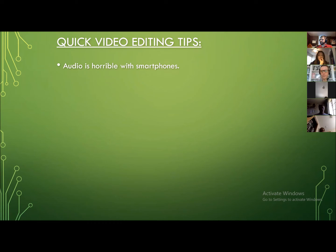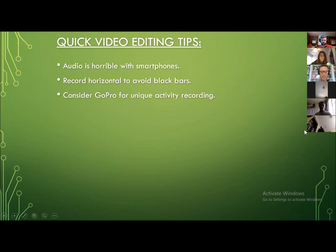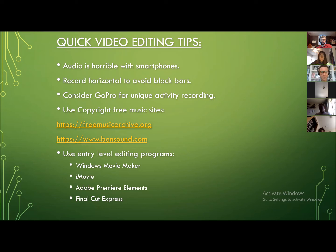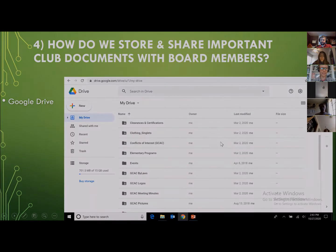Some editing tips: do not count on smartphones for capturing audio — use wireless microphones if you can. Record horizontally, particularly with iPads and smartphones, meaning hold it long ways rather than vertically, to avoid black bars when you post those videos later. For physical activity settings, consider using a GoPro. For things like edTPA, you don't need advanced software like Final Cut Pro or Adobe Pro — basic editing software is sufficient.